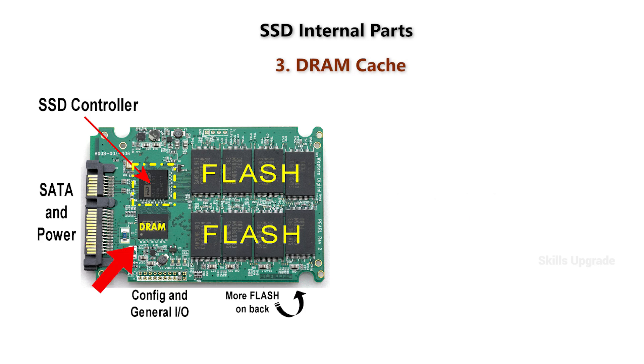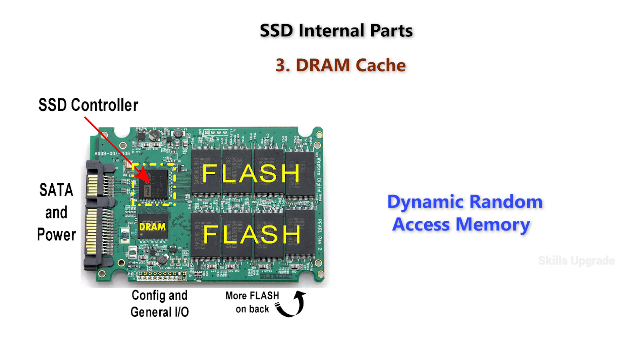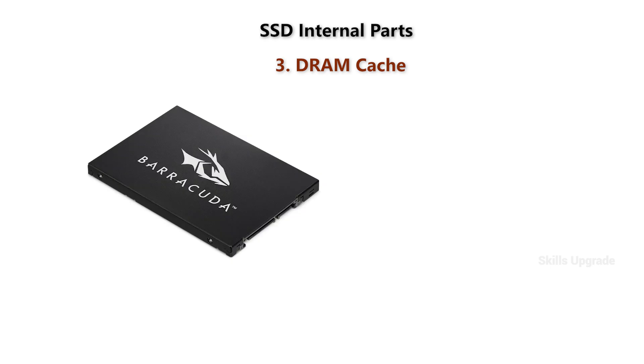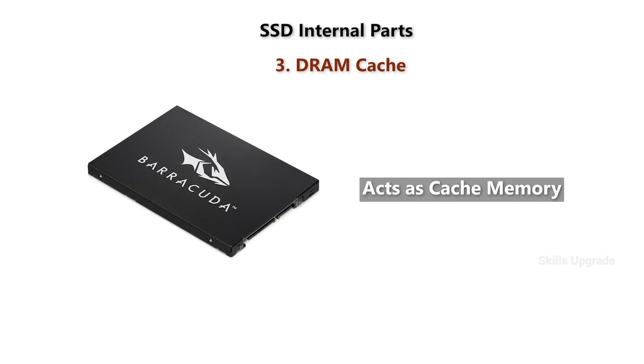Next is DRAM cache. DRAM is dynamic random access memory. If we are using SSD, this is the cache memory.